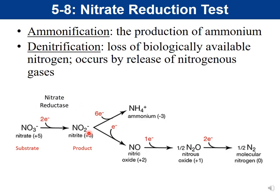You want to know the reagents: reagents A and B detect nitrite, and when nitrite is detected, they turn red. You also want to know the difference between ammonification — fully reducing nitrate to ammonium (NH4+) — and denitrification, which produces nitrogen gases. Denitrification results in loss of biologically available nitrogen because it's released as nitrogen gases. You don't need to memorize that NO is nitric oxide and N2O is nitrous oxide, just know they produce nitrogen gases.